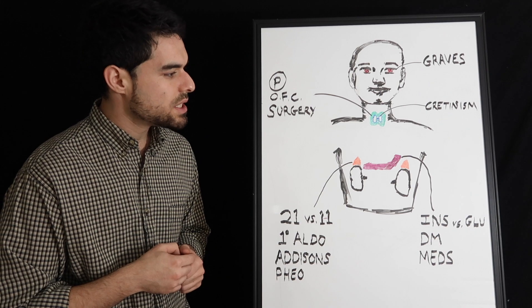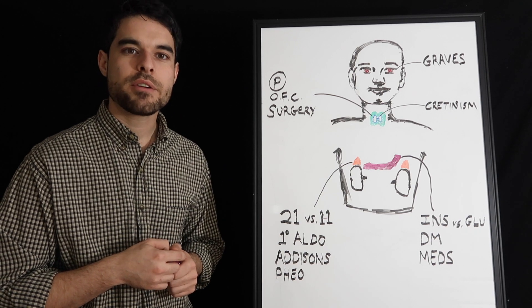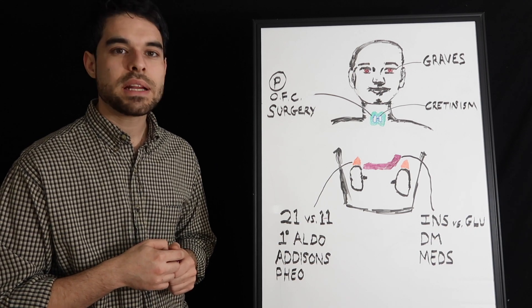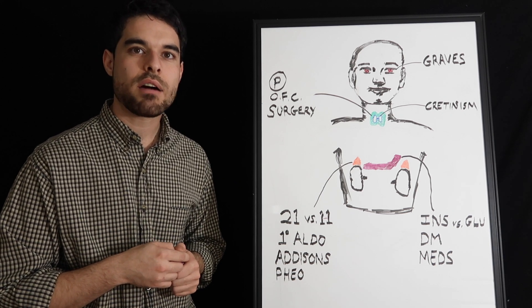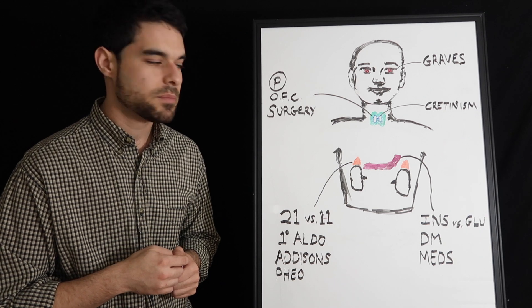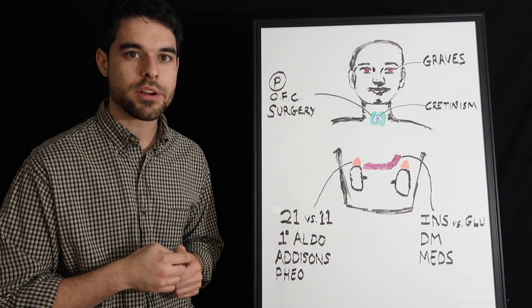The last organ that we'll touch is the pancreas. Know that insulin, beta-2, stimulates insulin release and that glucagon works with Gs alpha mainly on the liver. Most of its actions of glucagon are going to be on the liver.